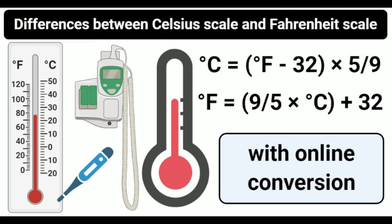The lowest defining point in the Fahrenheit scale is the temperature of a solution of brine with an equal amount of ice, water, and salt — ammonium chloride. The temperature of the average human body was first established at 96°F, which was later adjusted to 98.6°F. In this scale, the lower fixed point is considered 32°F and the upper fixed point is considered 212°F. The region between these two temperatures is divided into 180 equal parts so that each part equals 1°F. Thus, the freezing point of water is 32°F and the boiling point of water is 212°F on the Fahrenheit scale.